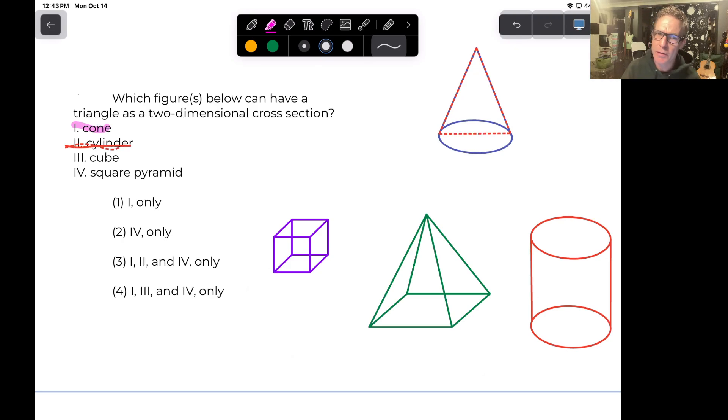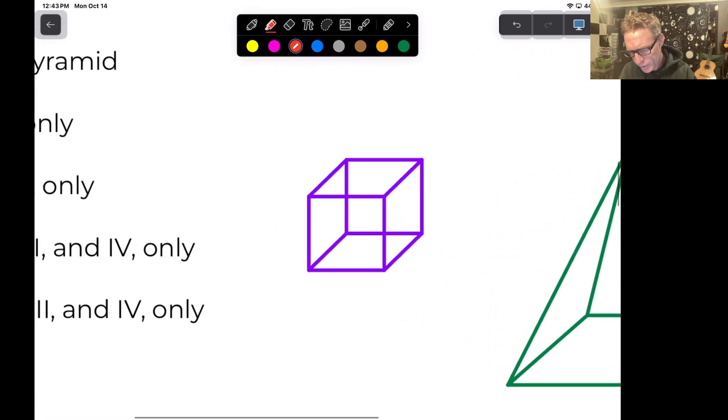A cube. This is the one that kind of throws a lot of students off. So you can actually create a triangular cross section from a cube. If we just zoom in a little bit here, if I just slice off one of the corners, that's going to work. Watch. If I just slice off this corner here, you could create a triangle. You're just slicing off one corner of the cube.